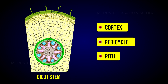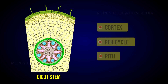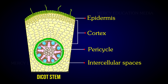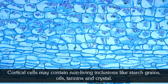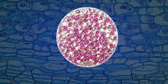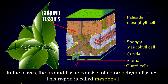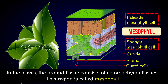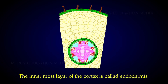Generally, in dicot stem, the ground tissue system is differentiated into three main zones: cortex, pericycle, and pith. The cortex occurs between the epidermis and pericycle and is made up of parenchyma tissues. Intercellular spaces may or may not be present. Cortical cells may contain non-living inclusions like starch grains, oils, tannins, and crystals. In leaves, the ground tissue consists of chlorenchyma tissues; this region is called mesophyll.